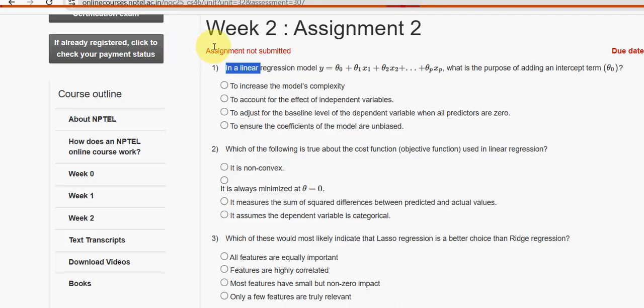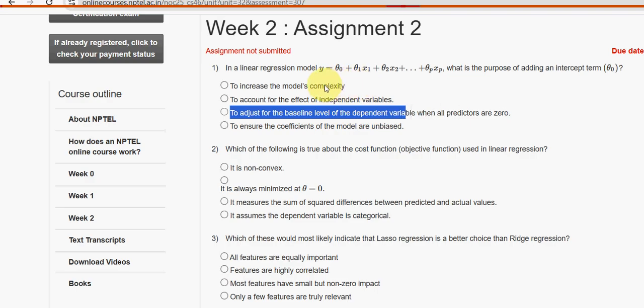Let's see the first question. In a linear regression model y equals theta naught plus theta 1 x1 and so on theta p xp, what is the purpose of adding an intercept theta naught? They are asking about this constant. For the first question, the answer is the third option. To adjust for the baseline level of the dependent variable when all the predictors are zero. Mark the third option as the probable solution.